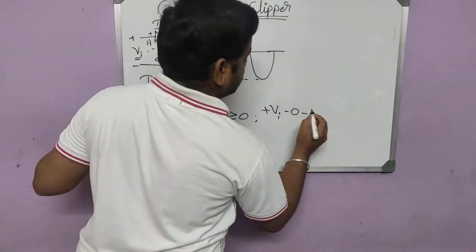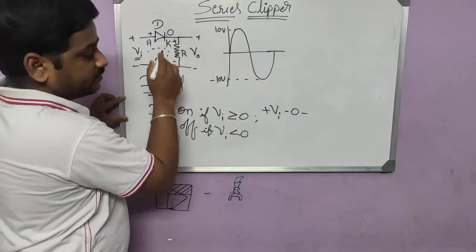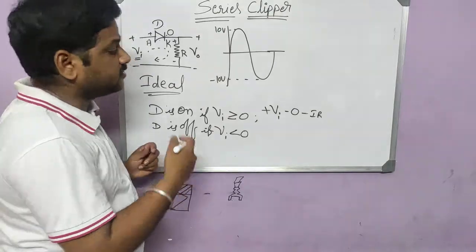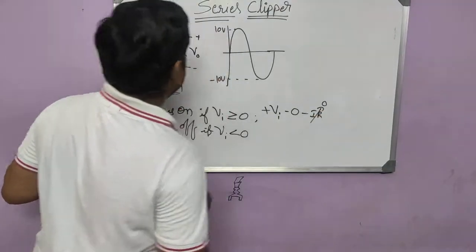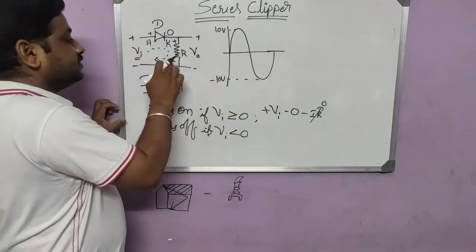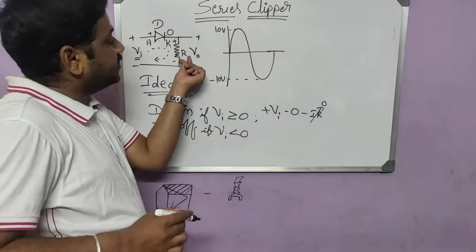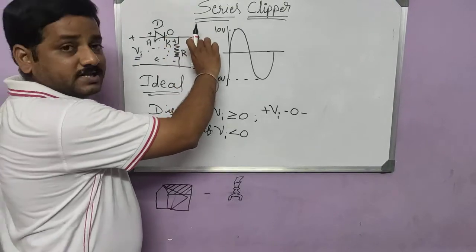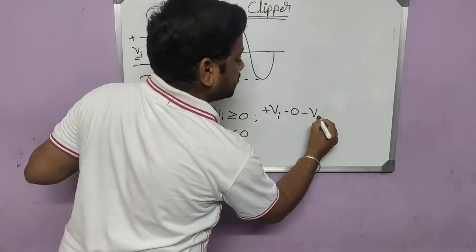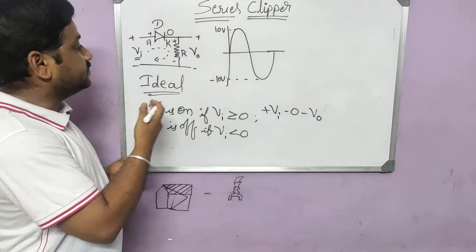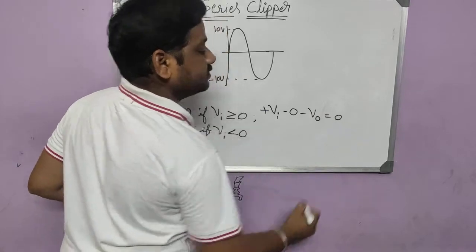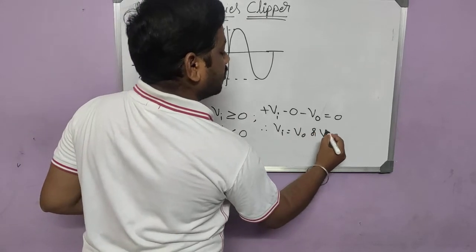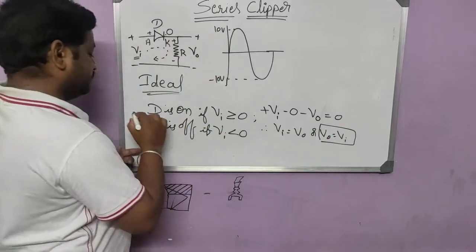Then for the resistance, in ideal conditions we can assume the voltage drop is also zero — generally it will be I×R, but for ideal we neglect it. So equating the KVL expression to zero, we get: Vin − Vout = 0. Therefore Vin equals Vout — the output voltage equals the input voltage when the diode is ON.